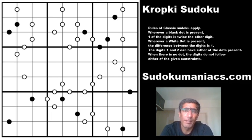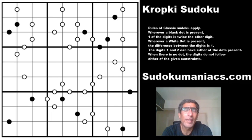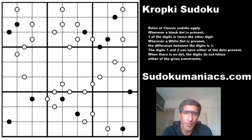The rules state that no digit can repeat in any row, column or a bold 3x3 outlined region. Additionally we will find a few white and black circles between two cells. A white circle signifies that the two digits in those connected cells are consecutive to each other, and wherever there is no white circle, the digits cannot be consecutive in those two adjacent cells. Wherever we find a black circle, it implies that the two digits are in the ratio of 1:2, or one digit is twice the other. And wherever there is no black circle, this constraint would not apply — just like the white circle.